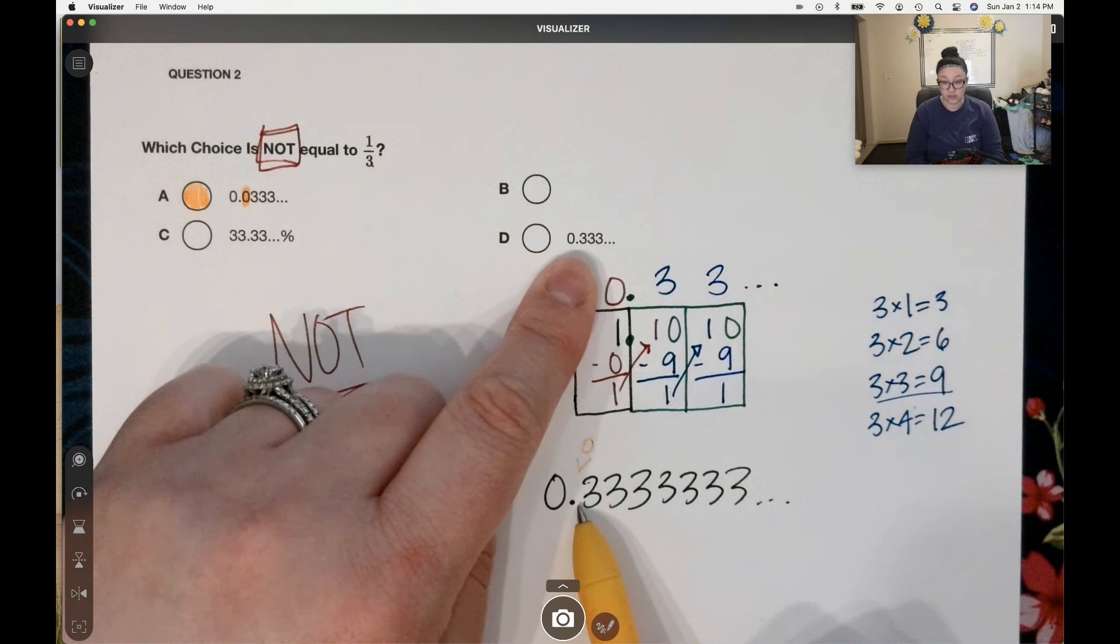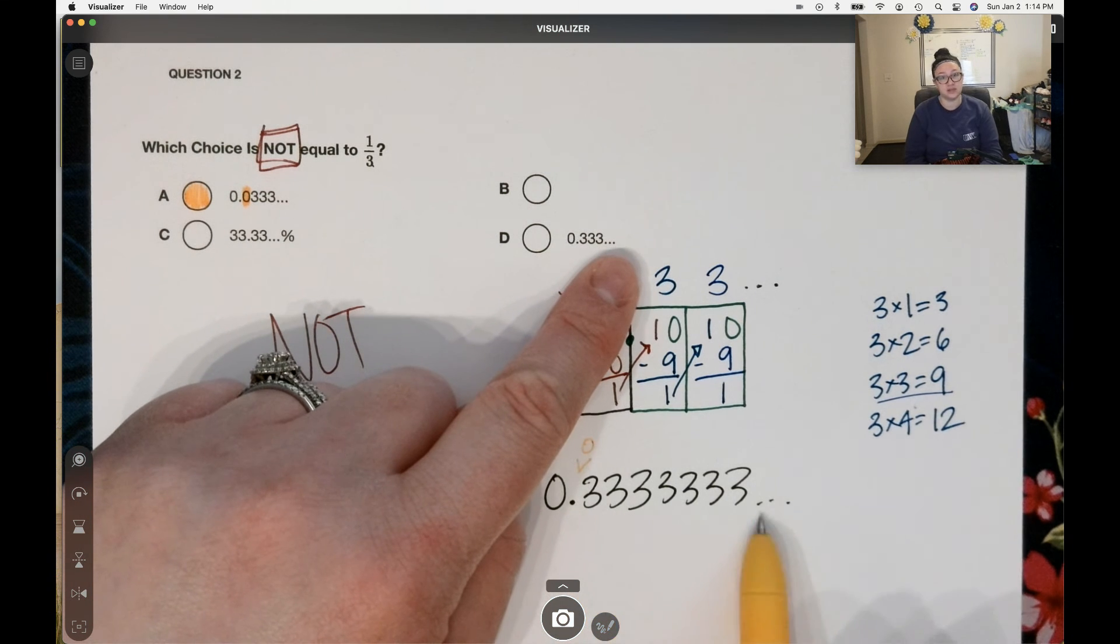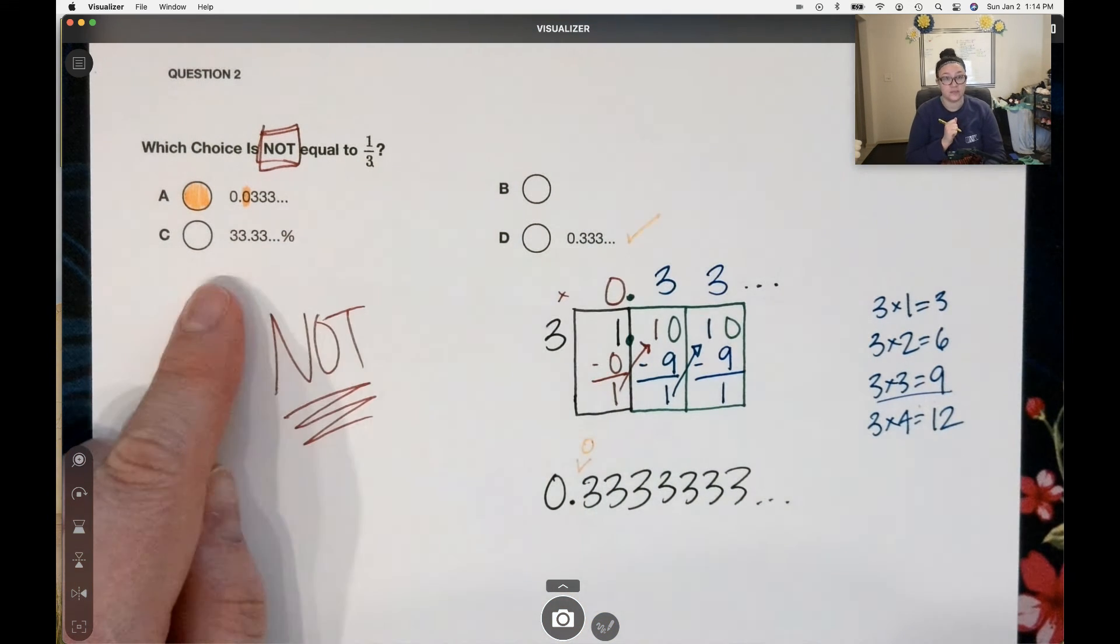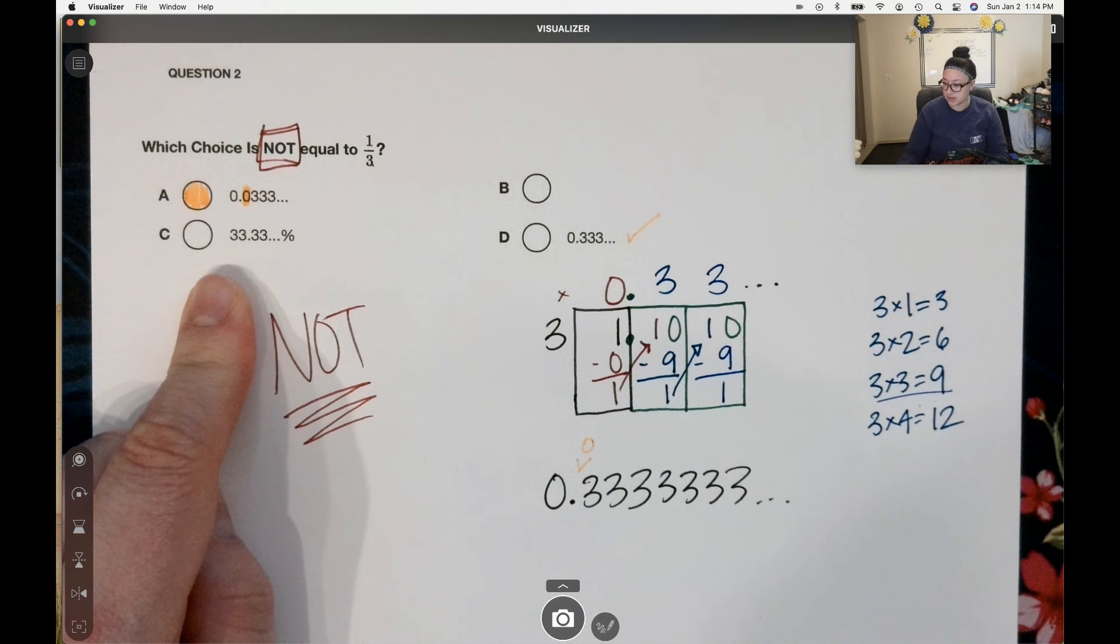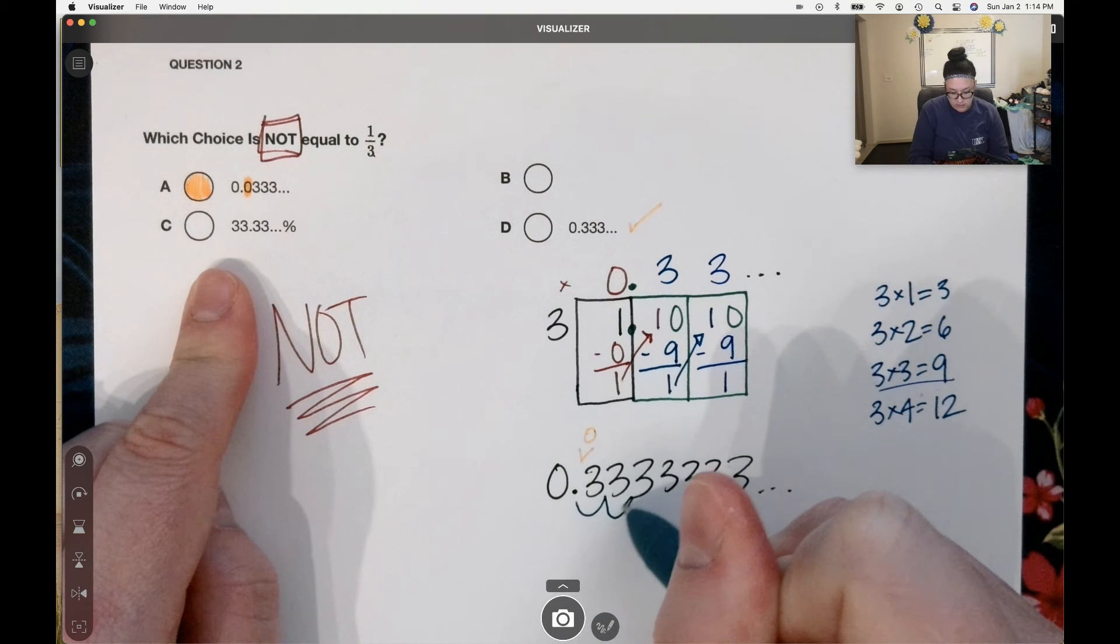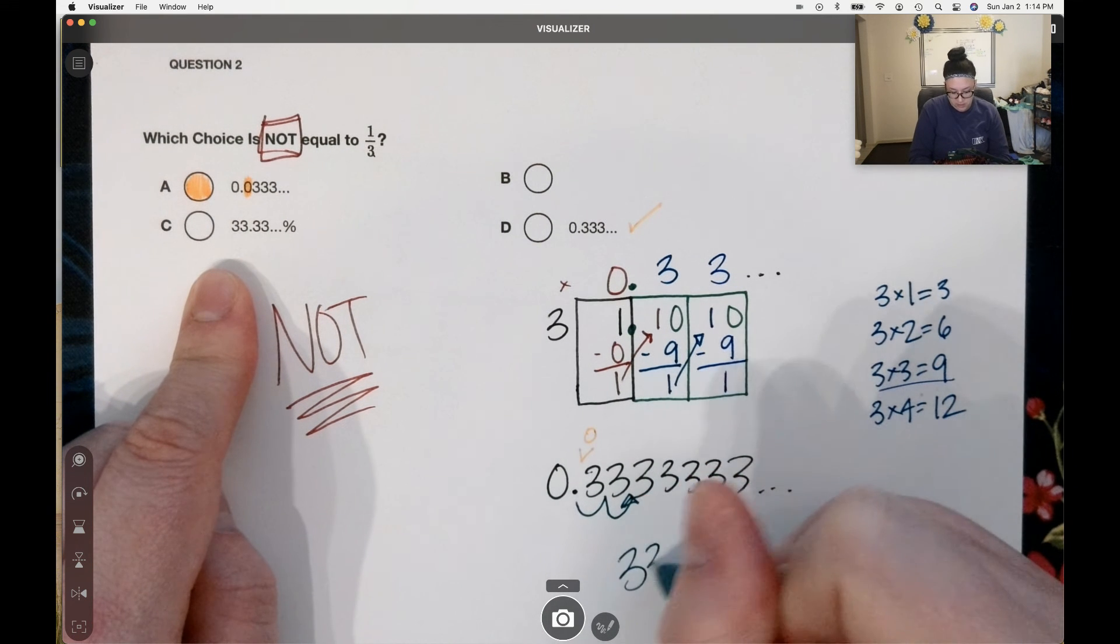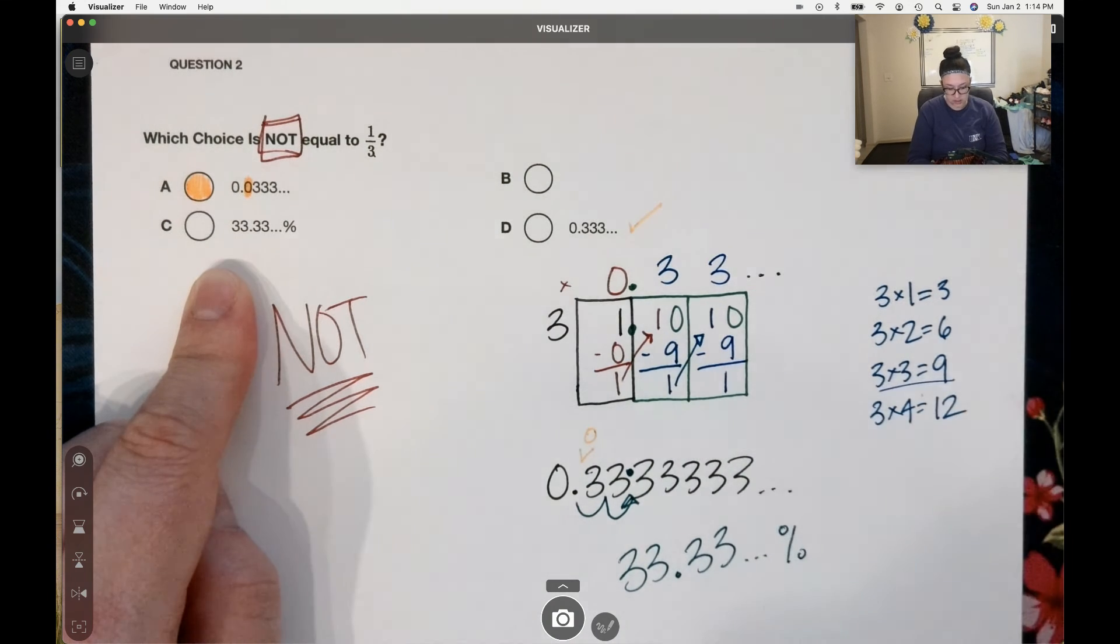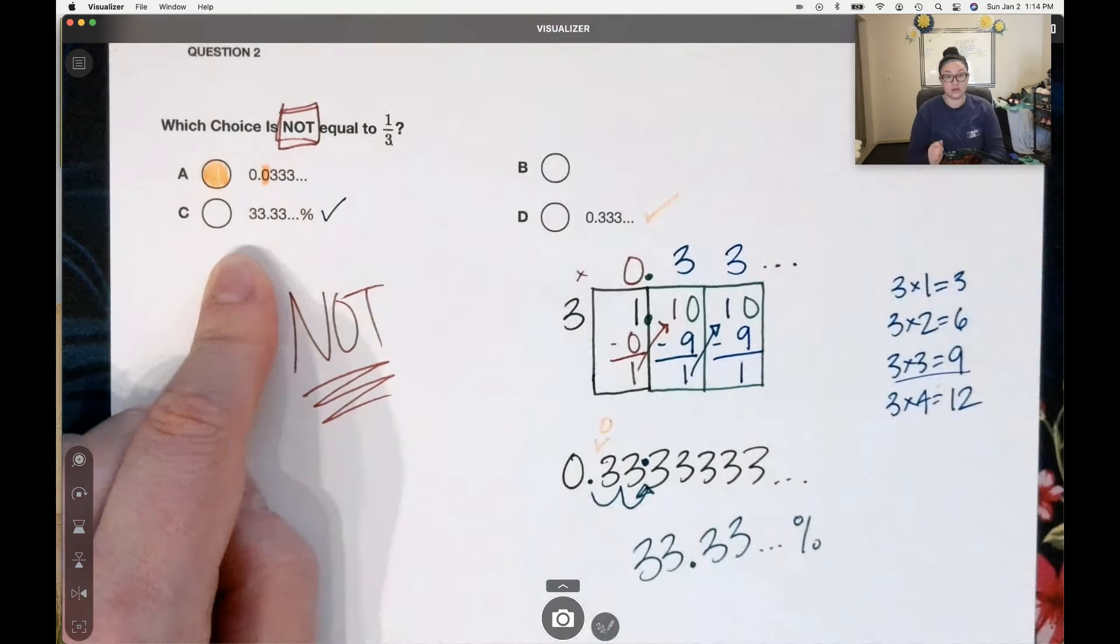D, zero point right after the decimal, there's a bunch of threes with the repeating dot. D is good. D is okay. If I want to turn this into a percent, I move my decimal to the right, to the right. That gives me 33 point three, three repeating percent. This one is also correct.